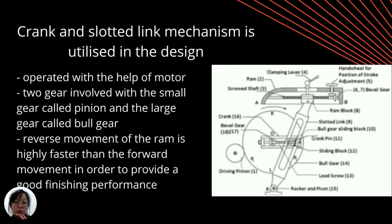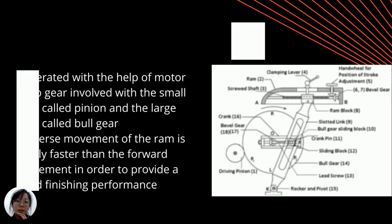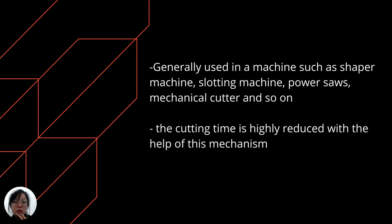In the crank and slotting mechanism, the reverse motion of the ramp is always faster than the forward motion in order to provide good finishing performance. Quick return mechanism is really useful and is generally used in machines such as shaper machine, slotting machine, power source mechanism, cutter, and so on. Due to the forward stroke being slower than the reverse stroke, the cutting time is highly reduced. The machine is able to reverse quickly after completing an action or work.